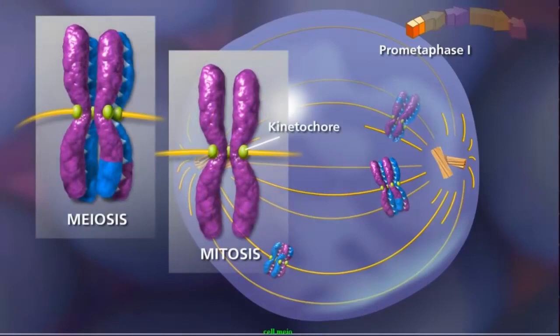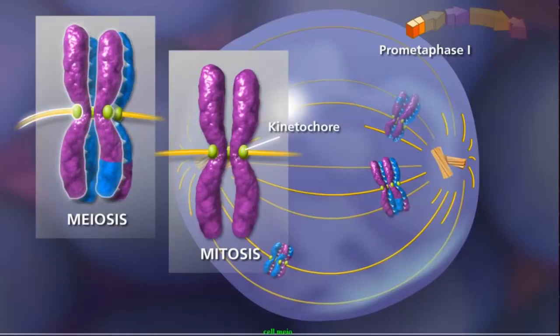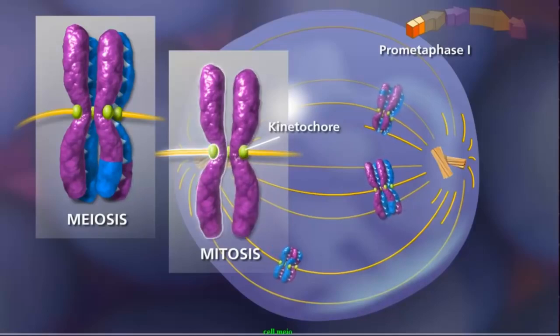Because of synapsis and crossing over in meiosis, homologous chromosomes remain aligned, so that a pair of sister chromatids is attached to only one pole by the kinetochore microtubules. In mitosis, each sister chromatid is attached to a spindle fiber. The fibers originate from opposite poles.